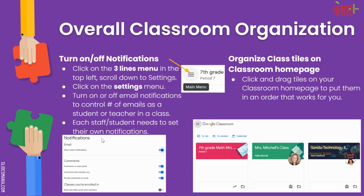Some overall classroom organization tips. First and foremost, you may want to turn on or off notifications. If your inbox is flooded with notifications from your Google Classroom, it's very easy to fix that. You're going to scroll to the three lines menu at the top left corner of Google Classroom, click on that, then scroll down to settings. Once you're in the settings menu, you can turn on or off email notifications for classes that you teach and classes that you are enrolled in to control how many emails you're getting. Each staff member and student needs to set their own notifications — that is not something you can control as the teacher for the class.